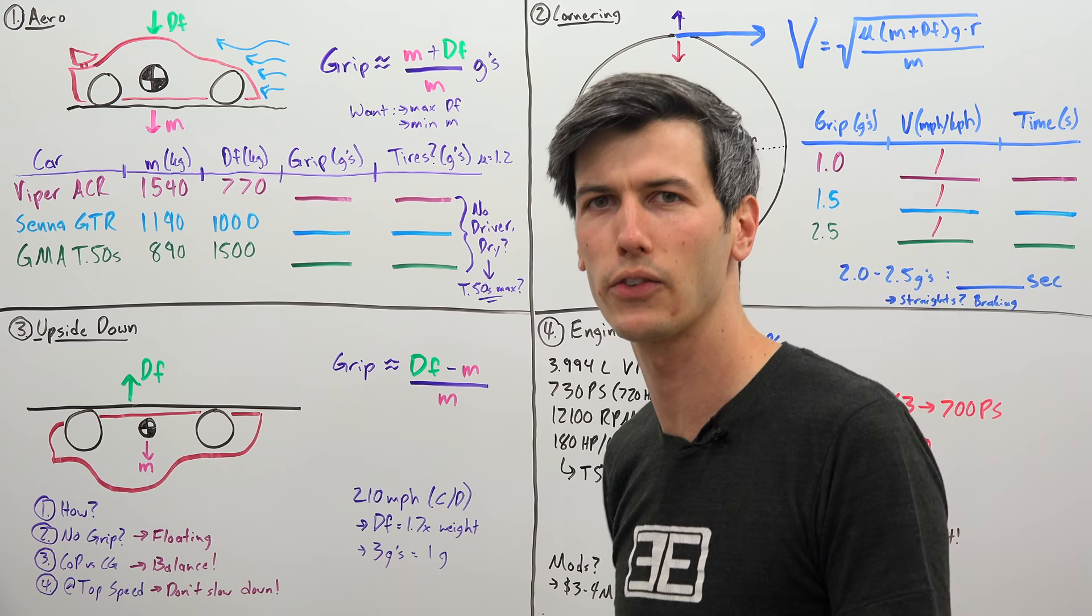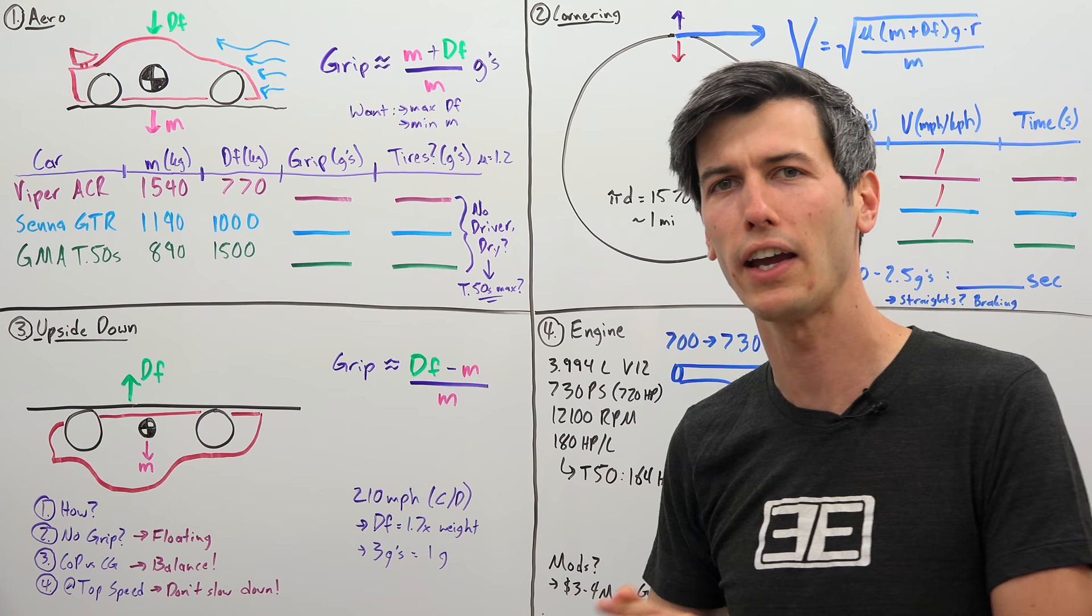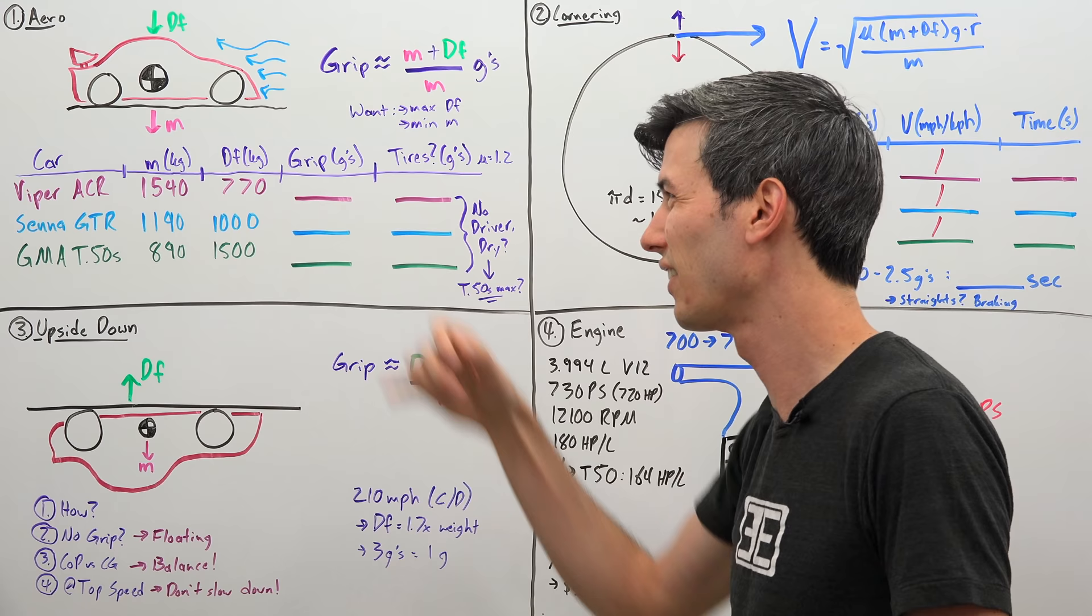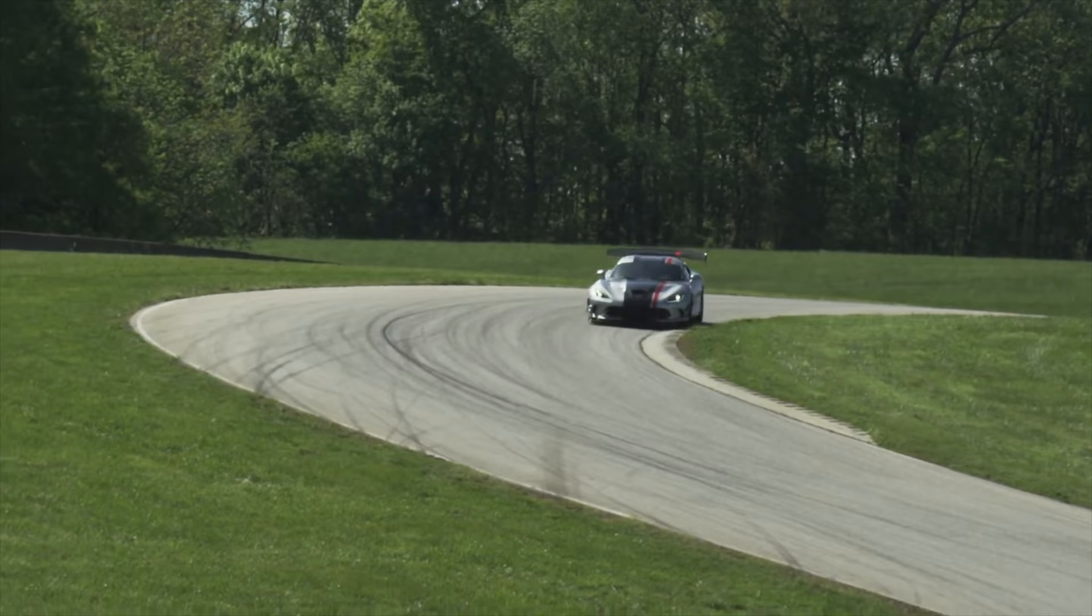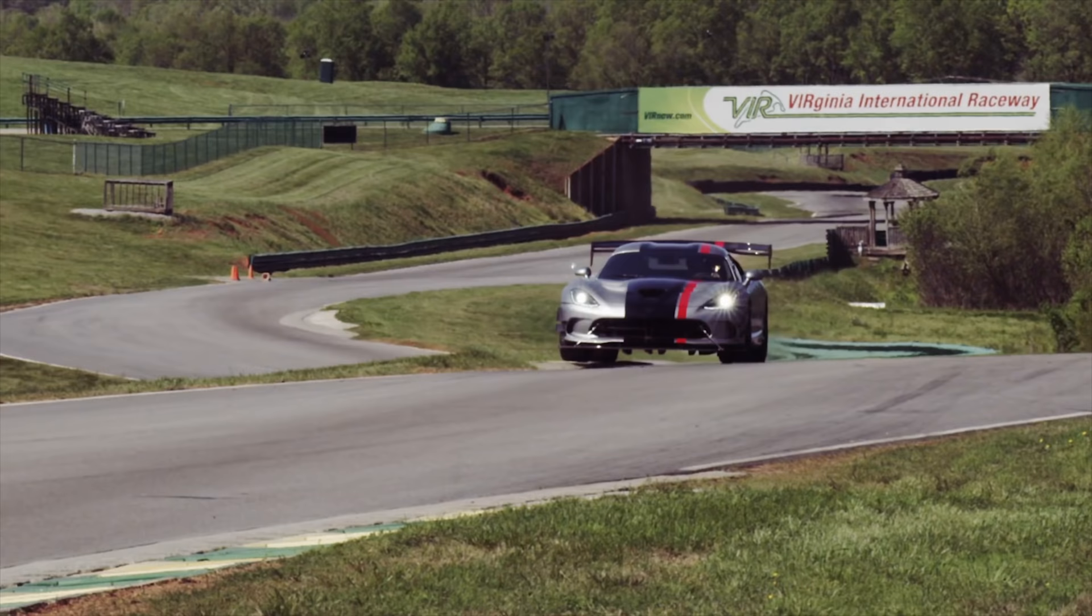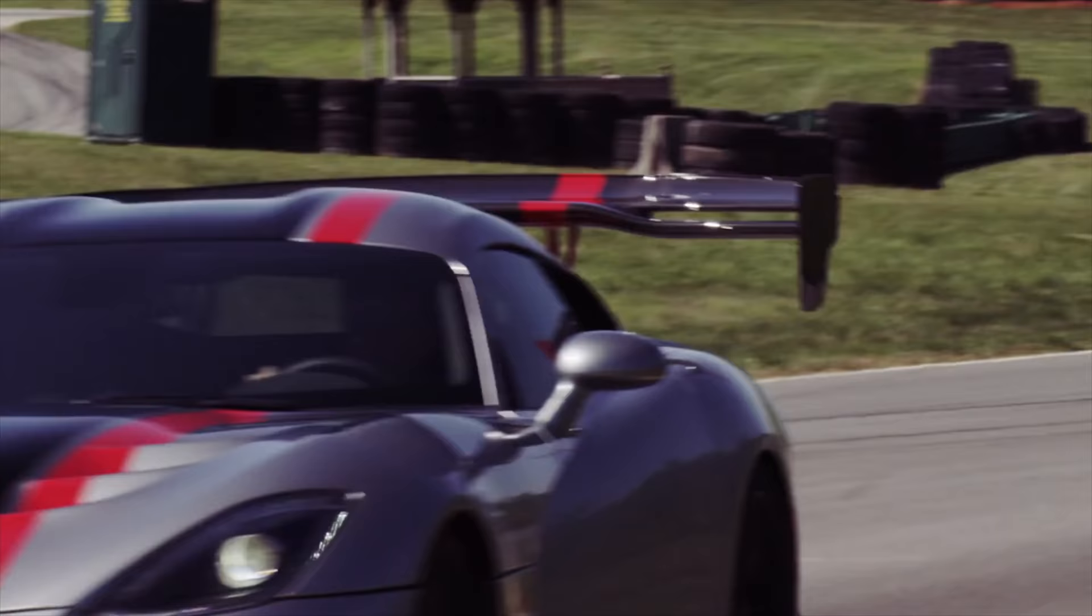If you think back to the 2016 Viper ACR, it went around and smashed a ton of lap records for production cars, and the Viper is fairly heavy at about 3,400 pounds with only about 600 some horsepower. But what it has working in its favor is an absurd amount of downforce: about 1,700 pounds of downforce (770 kilograms), producing about 1.5 lateral G's of grip.